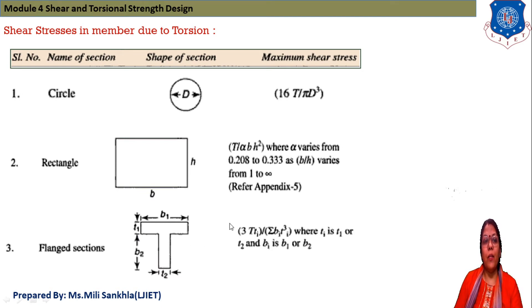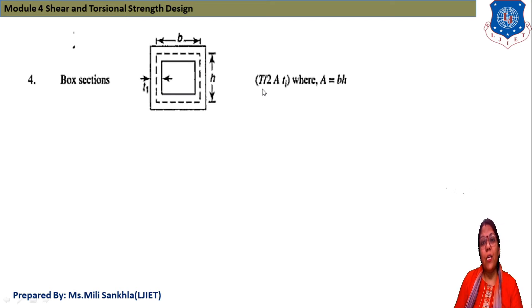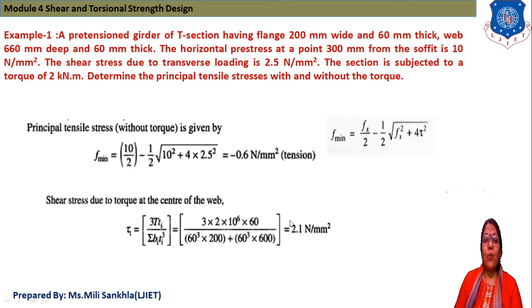The last section is the box section. The equation for maximum shear stress is τ_max = T / (2 A Ti), where the area A = B × H. This completes our overview of shear stress equations for different sections.